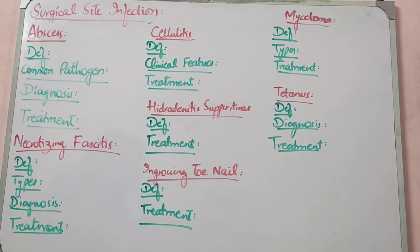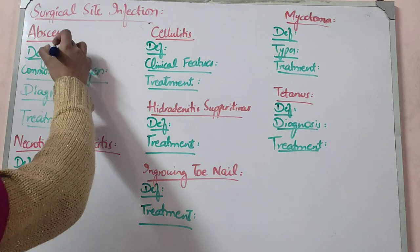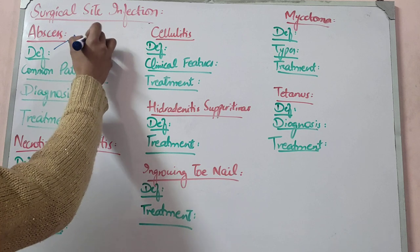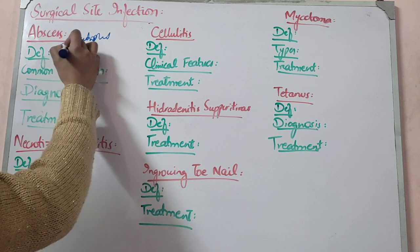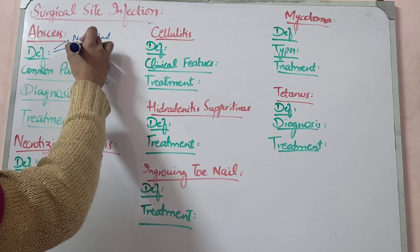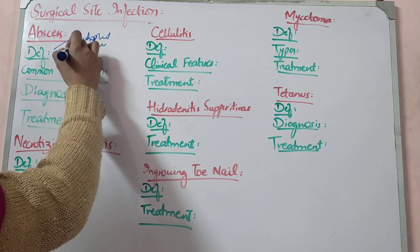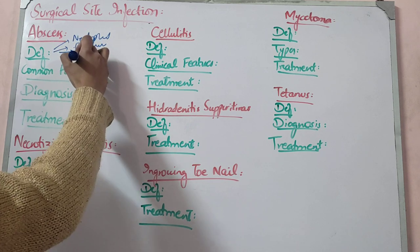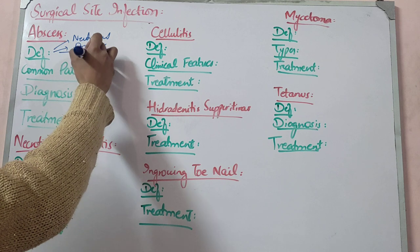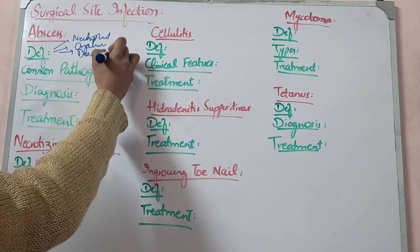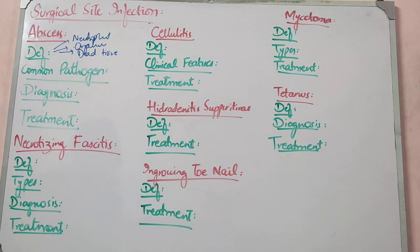It is necessary to drain it. What are the contents of abscess? There are three major things: neutrophils, dead tissues, and microorganisms — both dead and living organisms. All the inflammatory markers accumulate, things are covered by a membrane, and then abscess develops.